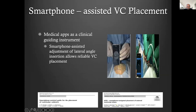Smartphone-assisted ventricular catheter placement uses an app calibrated for the cranium with scans loaded — almost like a compass that allows you to correct for curvature of the head. Initially used together with a stereotactic device, advances now suggest that using the app alone you're able to place the catheter under guidance. The publication suggests these medical apps will grow into very strong clinical guiding instruments.